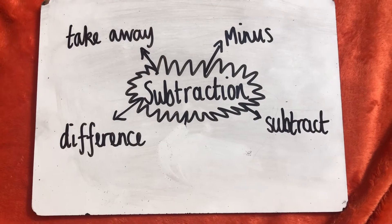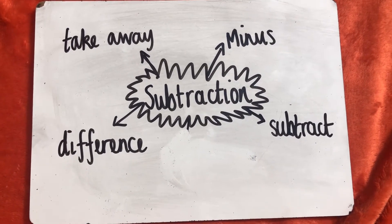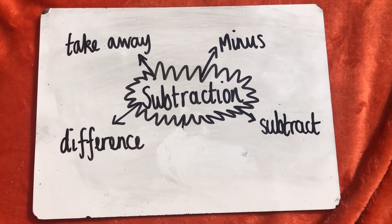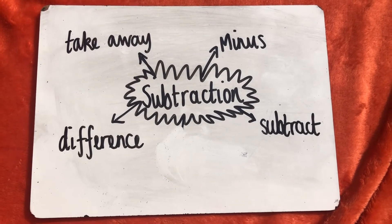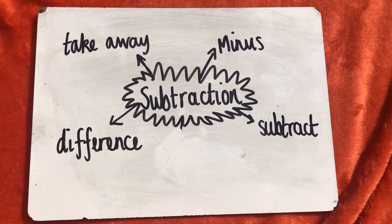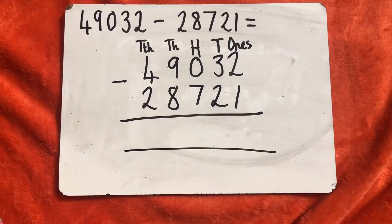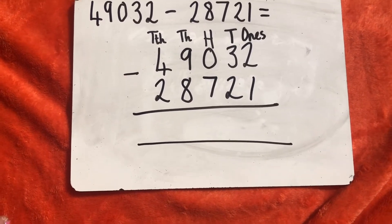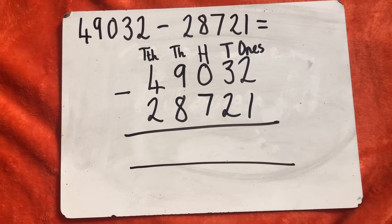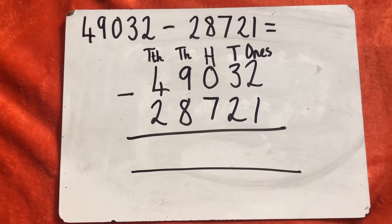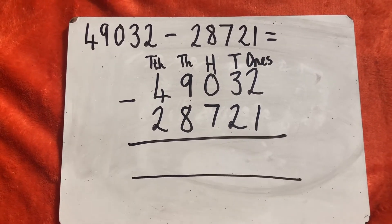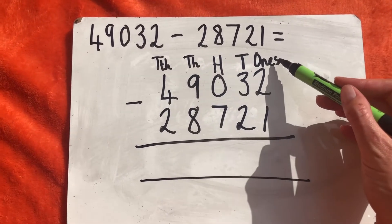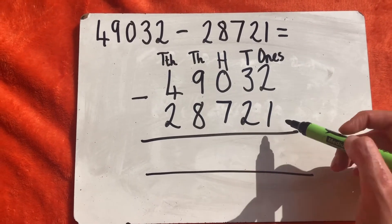Next we have subtraction. The words associated with subtraction are minus, subtract, take away and difference. So if I ask you to find the difference between 3 and 7, I'd be asking you to take away 3 from 7 or count on to find that difference, which would be 4. We are going to do 49,032 subtract 28,721. I've lined it up in our column subtraction method, labelled our place value columns, and checked all my numbers are in the correct column. We're going to start with our ones: 2 subtract 1 is 1.